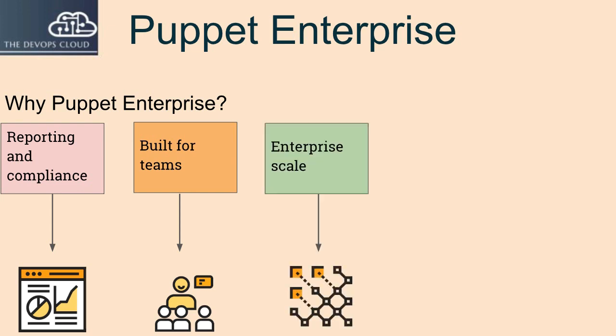Puppet Enterprise lets you deliver value to your organization quickly. Whether your infrastructure spans hundreds or tens of thousands of nodes, Puppet Enterprise scales easily to give you performance monitoring, resiliency and high availability, so you can roll out automation across your entire enterprise with full confidence.